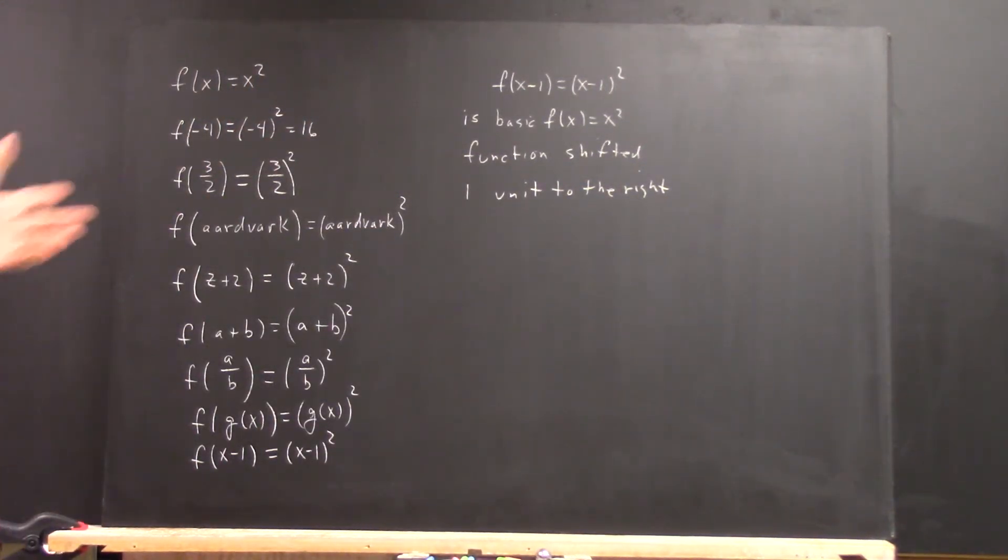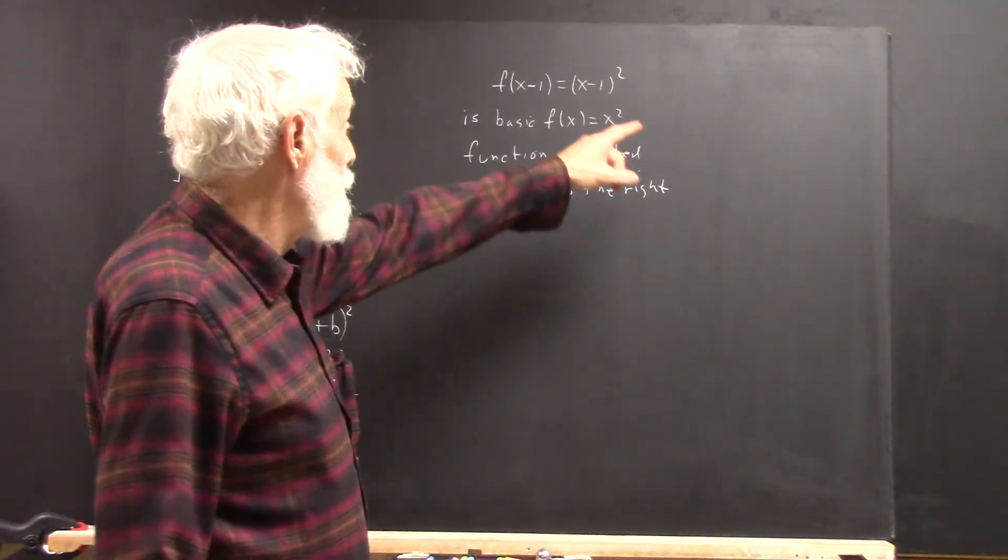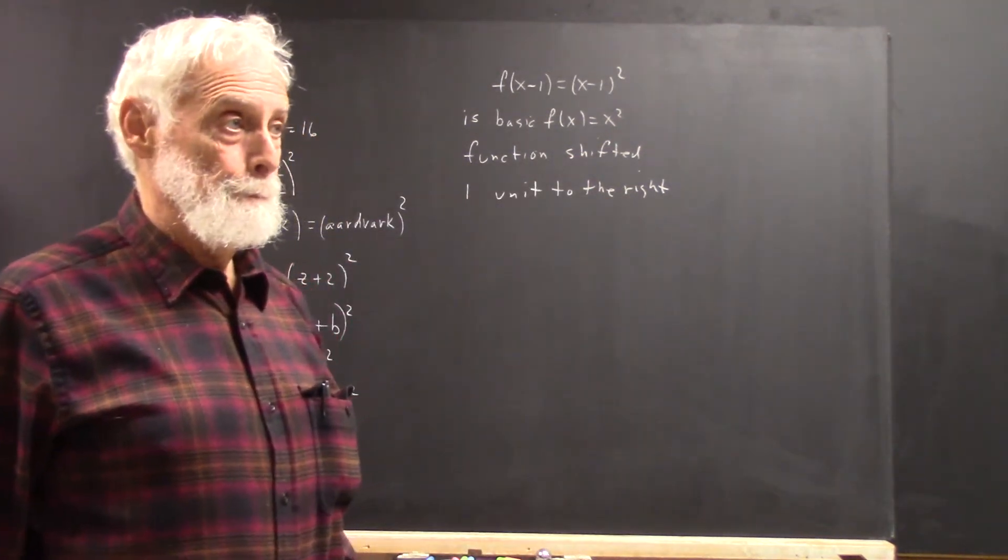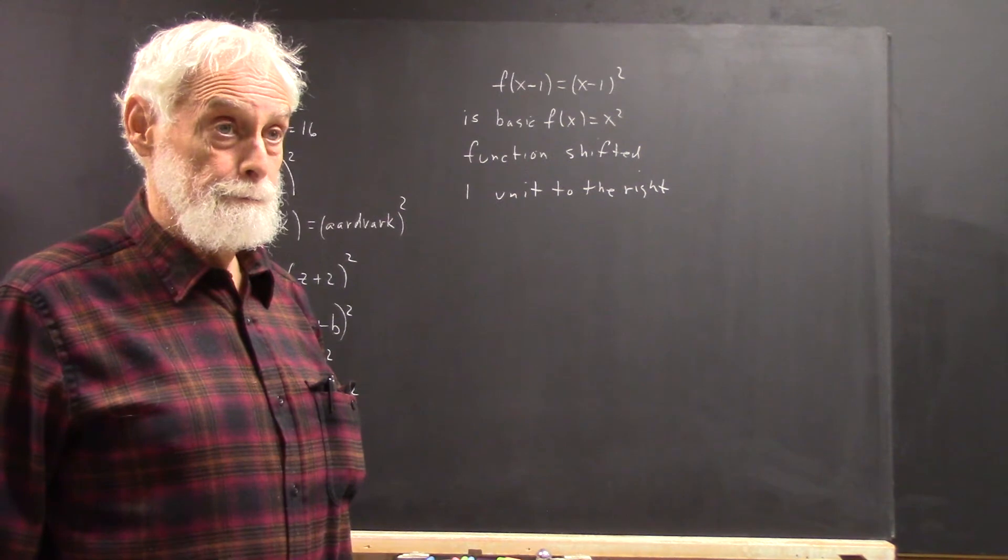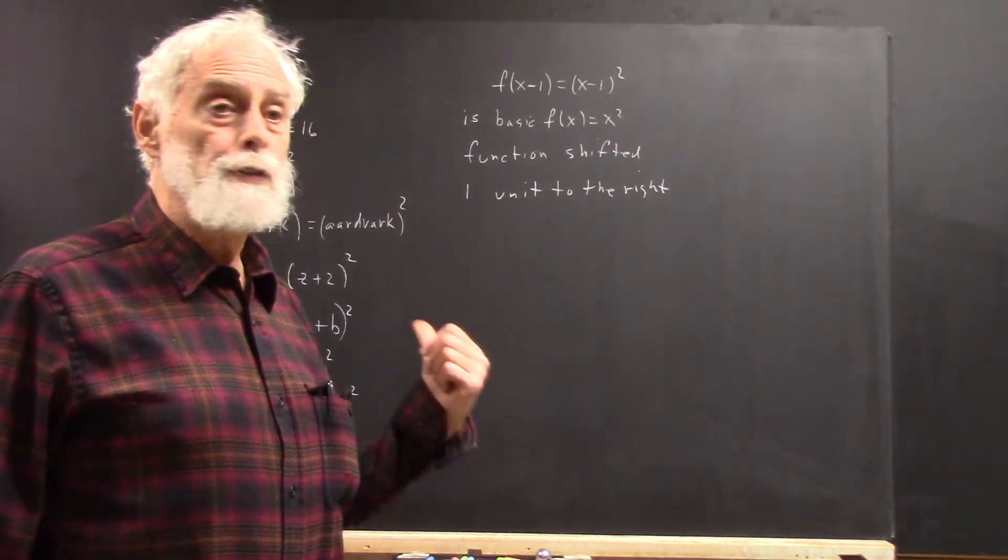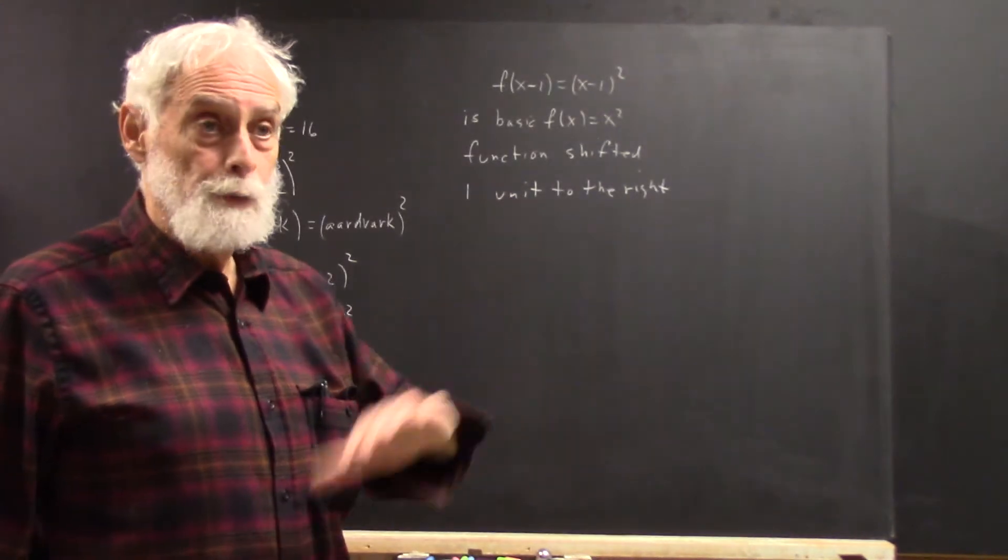It says f of x minus 1 is x minus 1 squared. It's the basic f of x equals x squared function shifted one unit to the right.